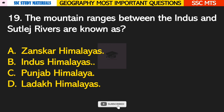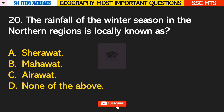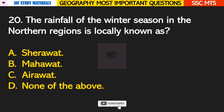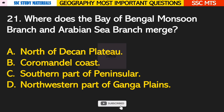Question number 19: the mountain ranges between the Indus and Satlej rivers are known as? Answer C — it is known as Punjab Himalaya. Question number 20: the rainfall of the winter season in the northern regions is locally known as? Answer B — it is known as Mahawat.